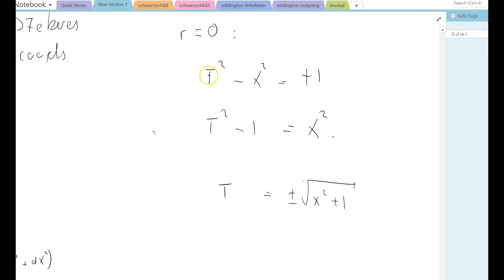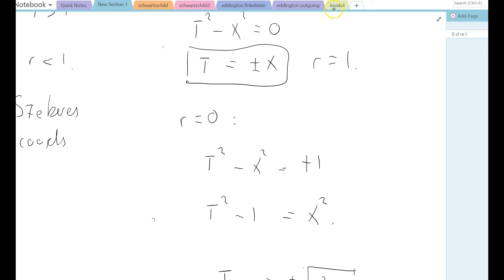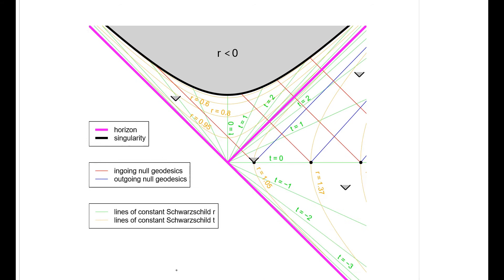So we've got these nice Kruskal coordinates t and x. What do they look like? Well, let's just have a look at what they look like. This is what they look like. So what we see is a diagram here where we've got the two Kruskal coordinates there, x on the horizontal axis and t on the vertical axis. And we see various features which I'll go through one by one.